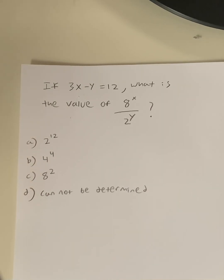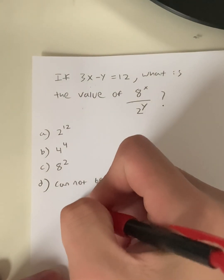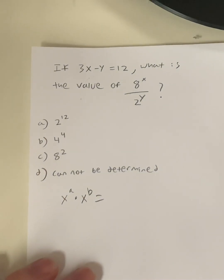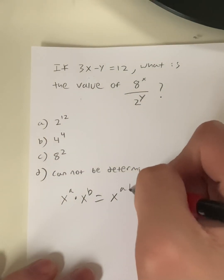There's a concept you have to understand first, and it's exponential rules. What are the exponent rules? First, if you have x^a times x^b, what is this equal to? This equals x^(a+b).